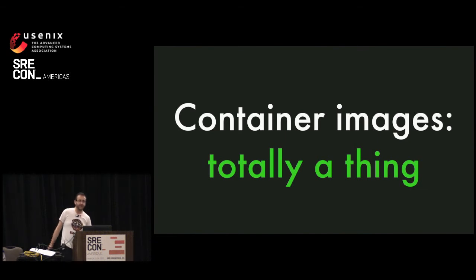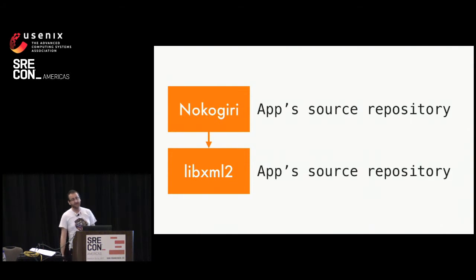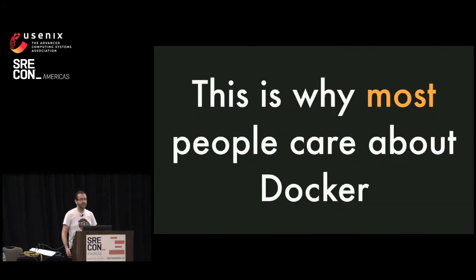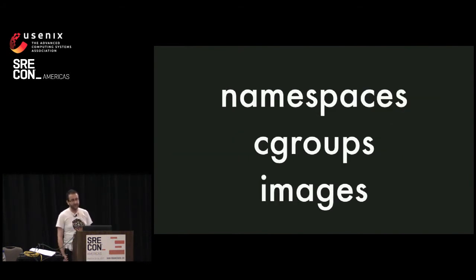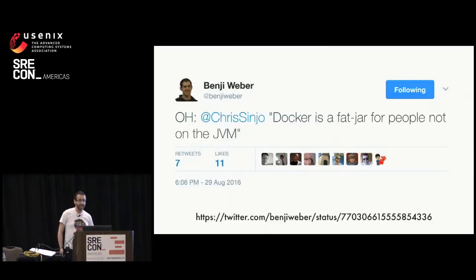So it turns out that container images are totally a thing that exists. Tools like Docker allow you to describe how to assemble your application into a deployable unit right down to the native libraries you depend on from the operating system — so it means you turn this into this. I would say this is why most companies care about Docker. Not companies like Google or Amazon trying to optimize their compute, but small companies who just want to deploy stuff and have it work. They don't care about Linux primitives like namespaces and cgroups all that much, but people flock to Docker as soon as they saw what they could do with images. The clickbait version of this opinion: Docker is a fat jar for people who aren't using the JVM.